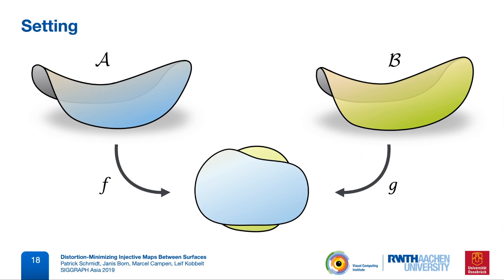We can now compose one parameterization function with the inverse of the other to obtain our surface-to-surface map phi. This map is defined at all surface points that pass through the overlap of both parameterizations in the plane. So we're mapping between subsets A' and B' of the input surfaces.